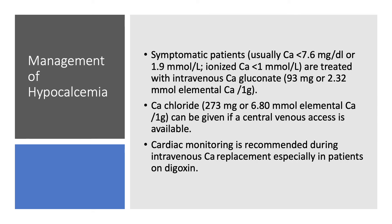How do we manage hypocalcemia? If the patient is symptomatic — usually calcium less than 7.6 mg/dL or 1.9 mmol/L, with ionized calcium less than 1 — we give intravenous calcium. The preferred IV calcium salt is calcium gluconate: one gram contains 93 mg of elemental calcium or 2.32 mmol. You can use calcium chloride, which has about three times more elemental calcium than calcium gluconate, but you need a central line. If replacing a lot of calcium, especially if the patient is on digoxin, it's better to have the patient on telemetry.